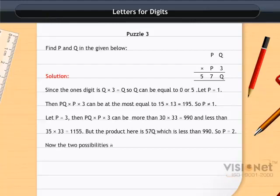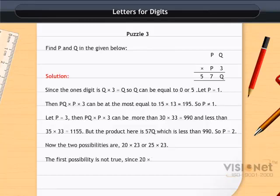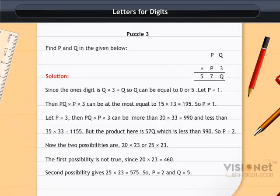Now the two possibilities are 20×23 or 25×23. The first possibility is not true, since 20×23=460. Second possibility gives 25×23 which is equal to 575. So P=2 and Q=5.